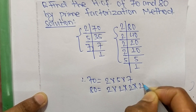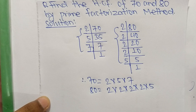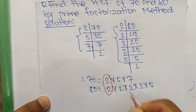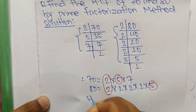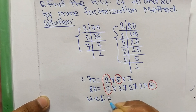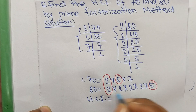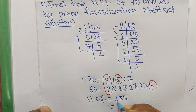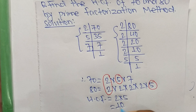Now we select the common factors. The common factors are 2 and 5. So the HCF is equal to the product of the common factors: 2 times 5, which equals 10. Therefore, 10 is the HCF of 70 and 80.